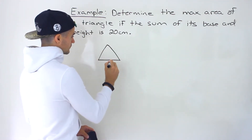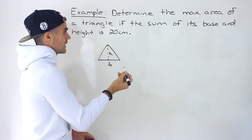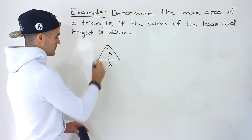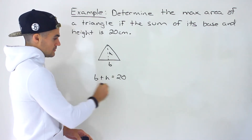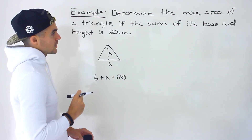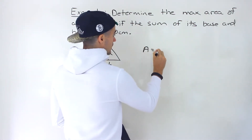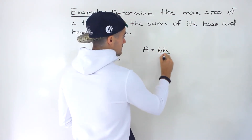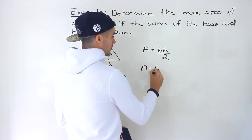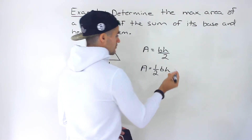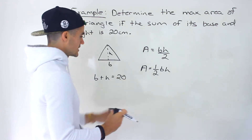We have a triangle and this triangle has a certain base and it also has a certain height. We're told that the sum of the base and the height is 20 centimeters — this is our constraint. We're trying to find the maximum area, and we know the area of a triangle equals one half base times height.